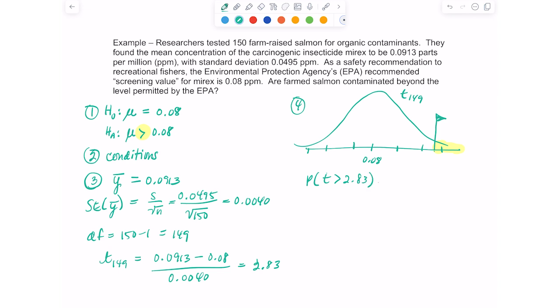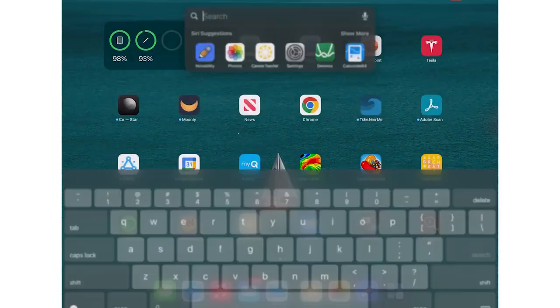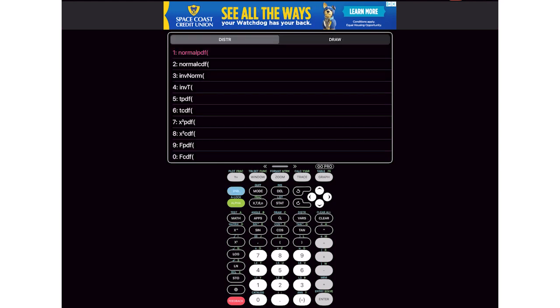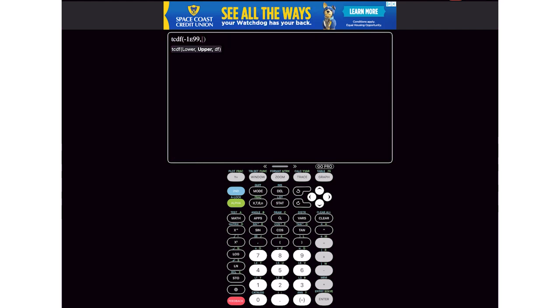So what I need to do is I need to go to a new function on the calculator. It's called TCDF. And you can find it where you find the normal CDF. You're just going to go to second, vars, and you're going to click on number six, which is TCDF. And it asks for the lower and then the upper and your degrees of freedom. My lower bound would be my test statistic, which was 2.83. My upper bound, we could just make it like a hundred. And the difference here is it doesn't ask for the mean and standard deviation, but it asks for the degrees of freedom. And here my degrees of freedom is 149. And then hit enter and we get 0.0026.